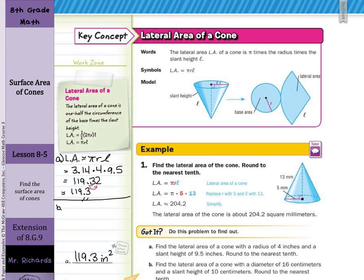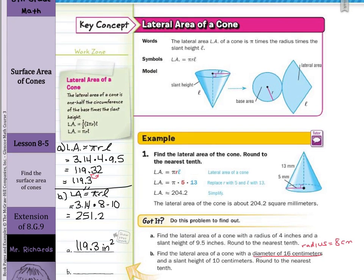What about example B? Find the lateral area of a cone with a diameter of 16 centimeters and a slant height of 10 centimeters, round to the nearest tenth. And this is where reading really comes in handy — a diameter of 16 centimeters means we're going to have a radius of 8 centimeters. So we can still use the same formula: lateral area equals pi times R times the slant height, which means 3.14 times the radius of 8 times the slant height of 10. When you multiply these together, your result is 251.2 centimeters squared.